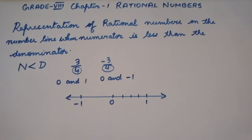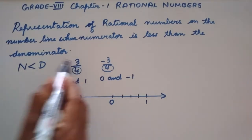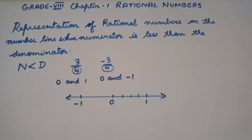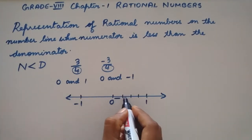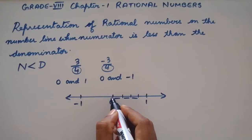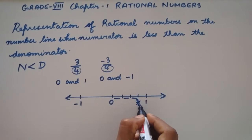4 equal parts. Now moving to the numerator — the numerator tells us the number of parts from 0. Since the numerator is 3, we move 3 equal parts from 0. So we mark 3 by 4 here.